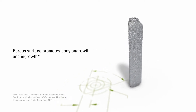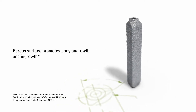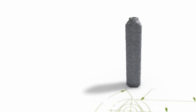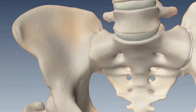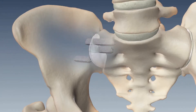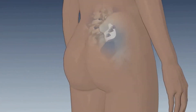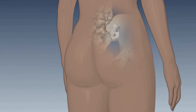This is a minimally invasive way of stabilizing and fusing, and thereby treating the pain associated with chronic SI joint pain. The procedure is very short — about an hour or less — and it uses a very small incision, about a one-inch incision on the side of the buttock or hip.